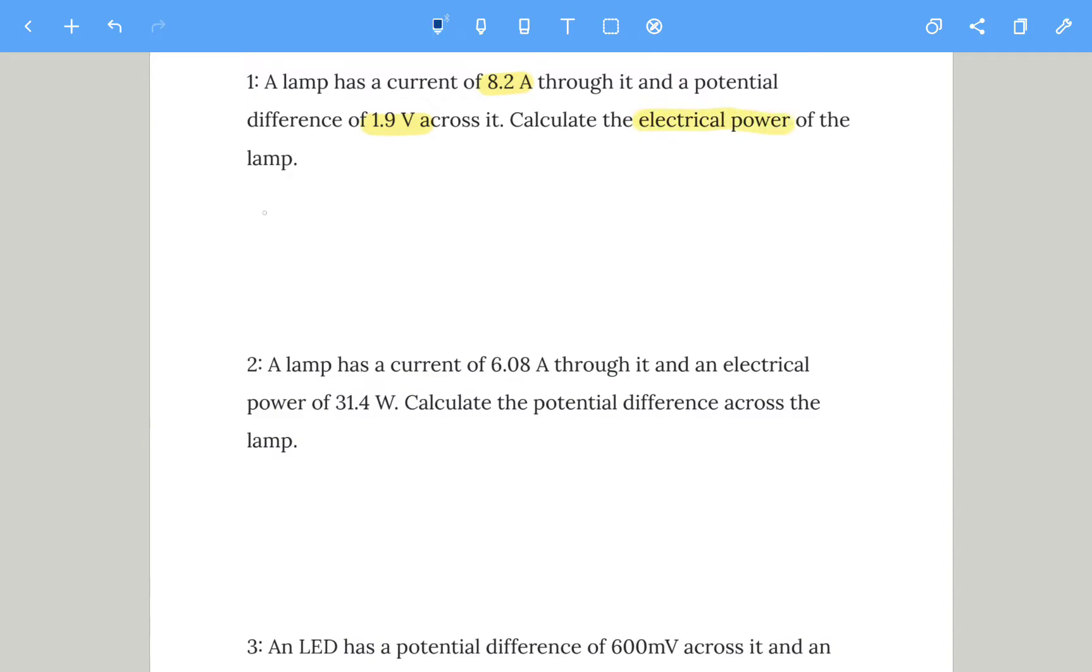So that one's current and voltage, so that's simply P equals I times V. We simply need to multiply the numbers together. Current is 8.2 amps multiplied by 1.9 volts, and that gives us 15.6 watts. If you've written 16 watts, that's fine.